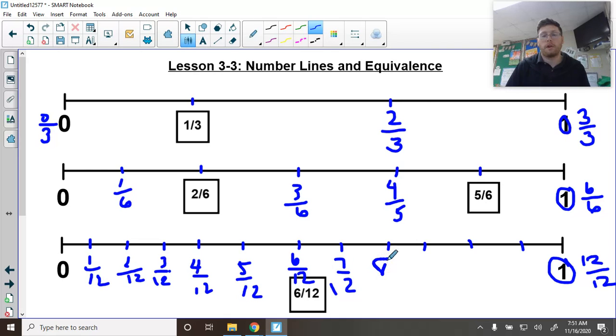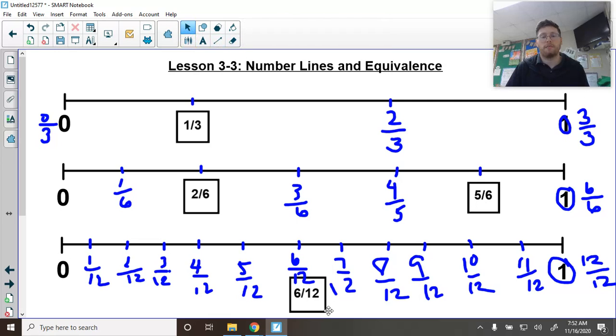9 twelfths, 10 twelfths, and 11 twelfths. All right. Next, I take my fraction, 6 twelfths, it goes right here. And we learned the other day that 6 twelfths is actually the same thing as half. All right. So it's half.